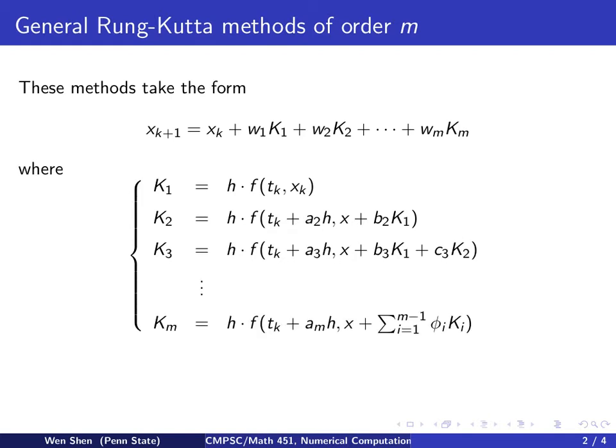And you continue going on until you reach the last constant, Km, which will be evaluated at Tk plus Am times H. And for x, you would add possibly all the previous Ks that you have computed with some linear combination. Now the parameters—the weights, all these AIs, BIs, and CIs—there are many of these parameters. They are carefully chosen to guarantee the order M.